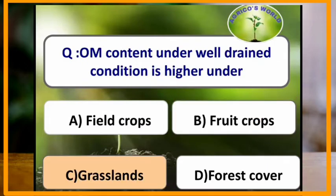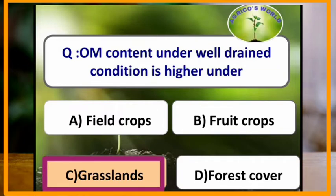Organic matter content under well-drained conditions is higher in which of the following? Organic matter content under well-drained condition is higher in grasslands.